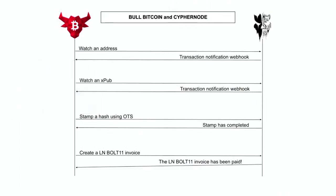This is a sequence diagram. How it works: you see the players and the interactions between them, following the arrows from top to bottom. I'll be using this kind of diagram throughout the presentation. I don't want to go into technical bits-and-bytes details, but having an idea of the interactions between players is pretty interesting.